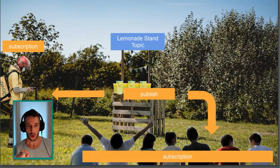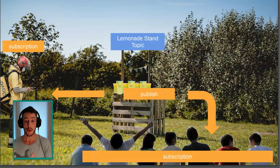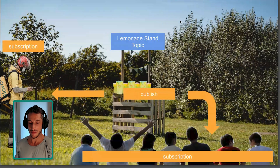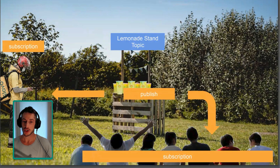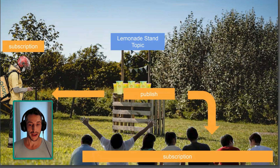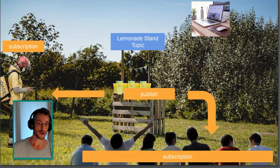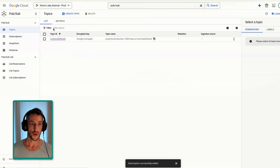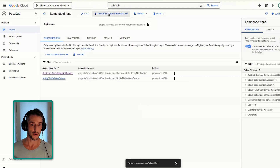We now have two subscriptions set up with our lemonade stand topic. Every time we publish something, all the subscriptions will be listening to those messages. We want to actually send a third message as soon as something is published in order to notify our friend with storage and equipment — so they can come and bring lemons, ice, or anything that's missing. It's going to be a simple Slack message which shows up on their computer. That computer is in the cloud and located remotely, so we are going to be using a cloud trigger function. Going to our topics, we'll go to the lemonade stand and trigger a cloud run function.